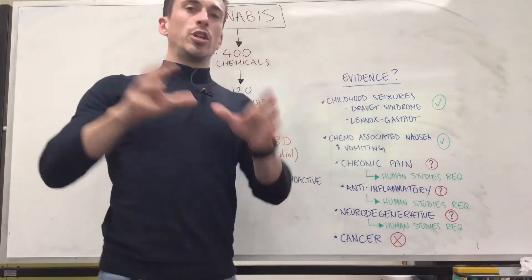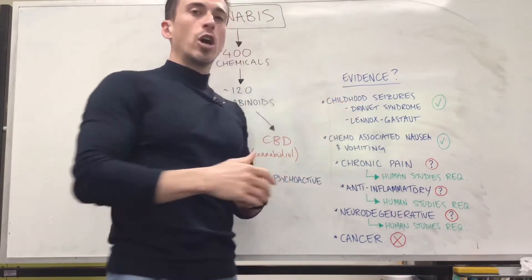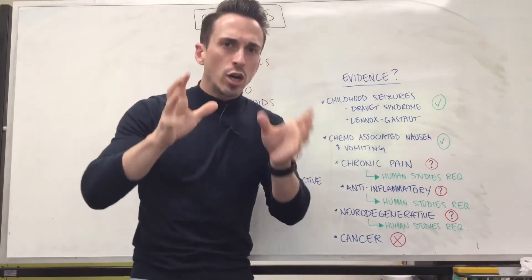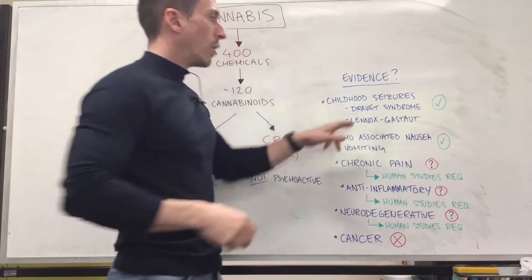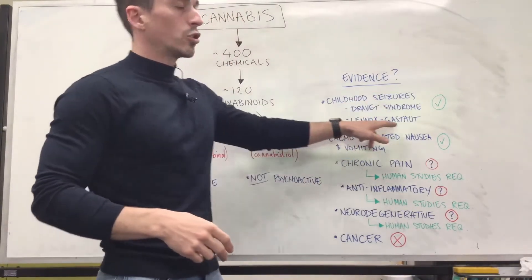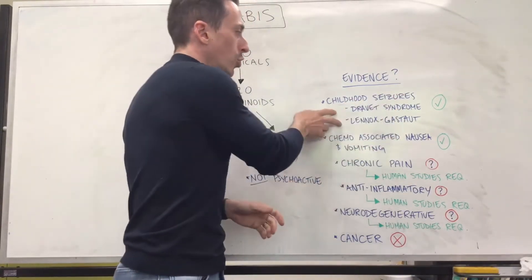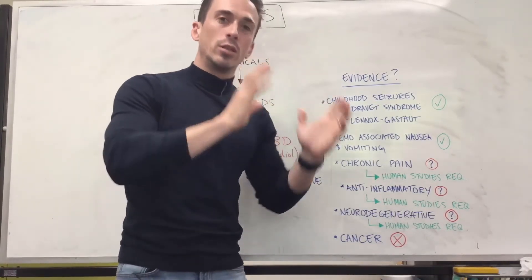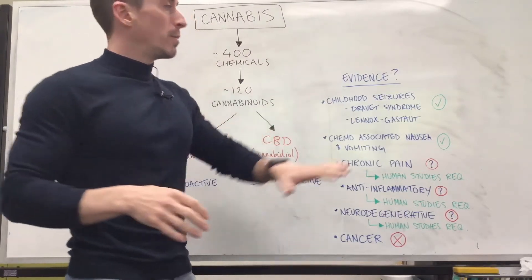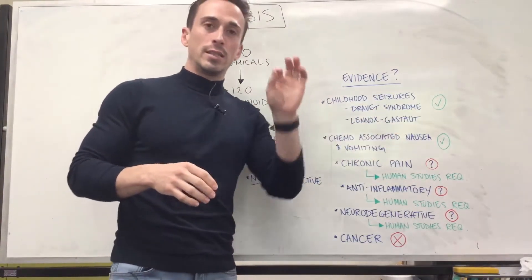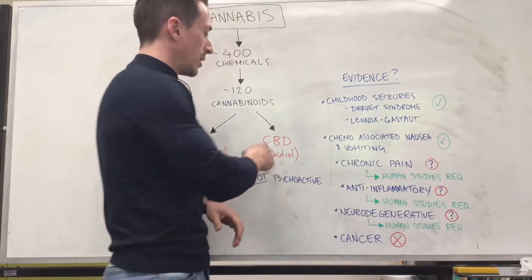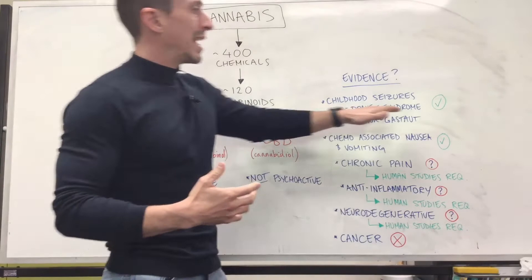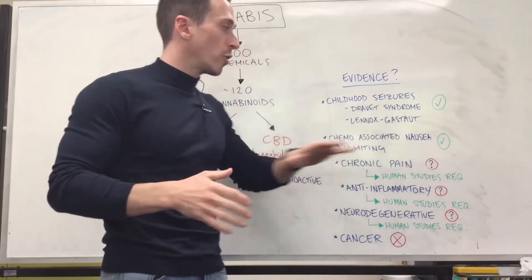The first line of evidence suggests that CBD is beneficial for childhood seizures — not just any childhood seizures, but severe childhood seizures that often fit under these two categories: Dravet syndrome and Lennox-Gastaut syndrome. These two seizure disorders are severe and occur in children, and CBD has been shown to be beneficial for them. They've actually turned CBD into a medication that can be taken, so there is a clear therapeutic benefit for these particular syndromes.